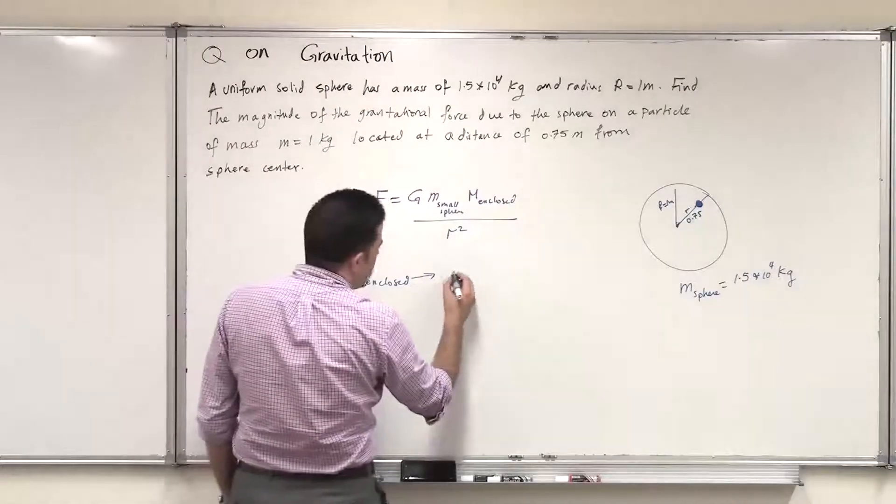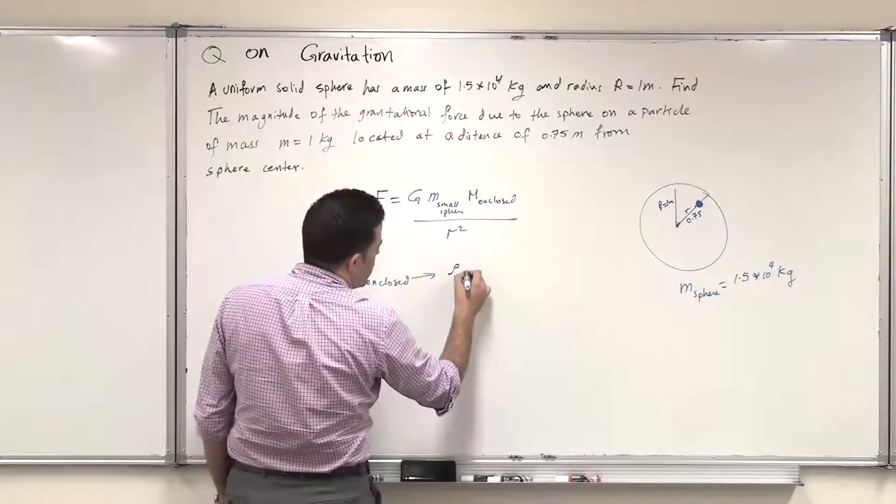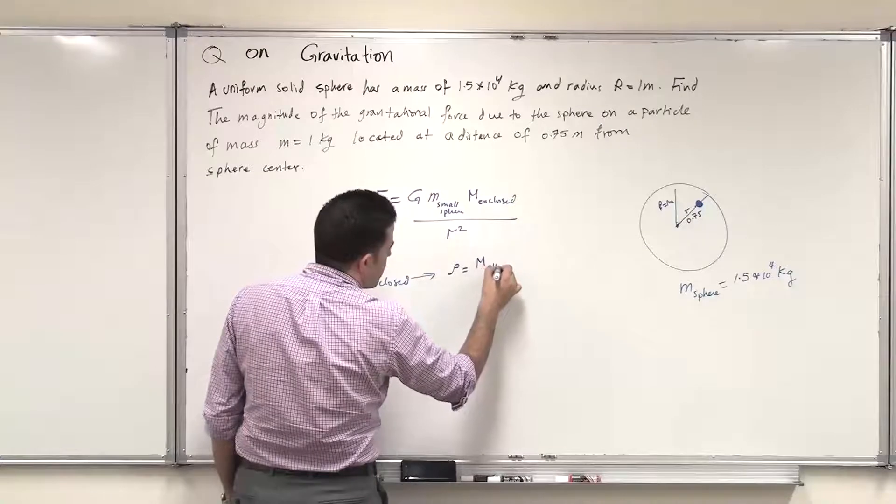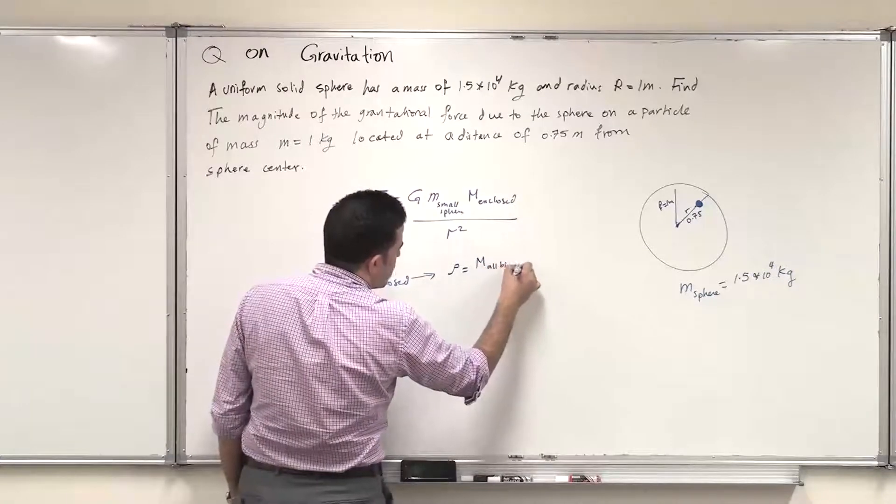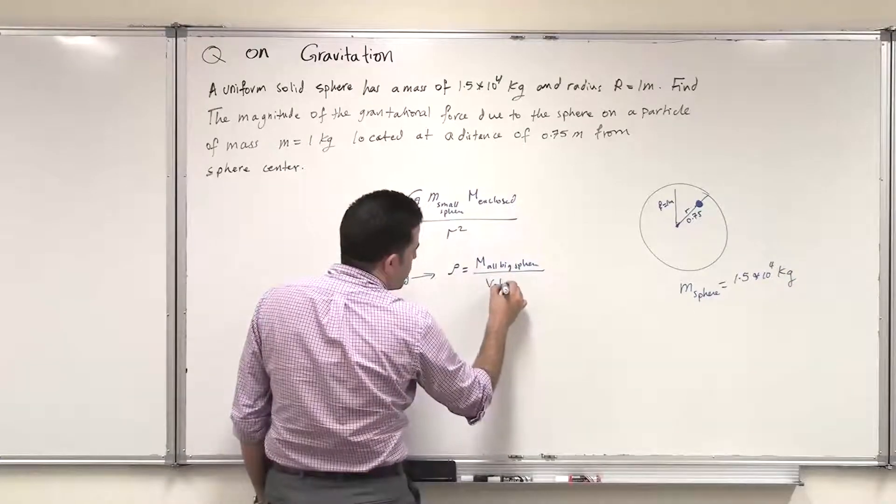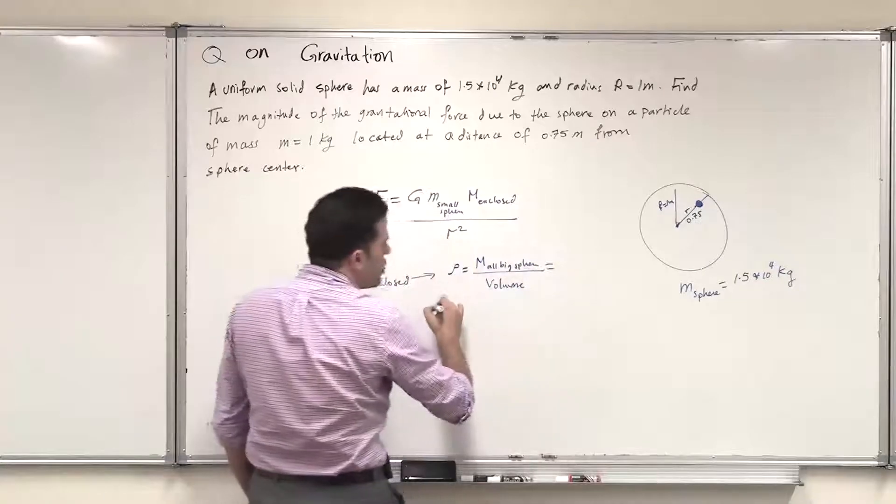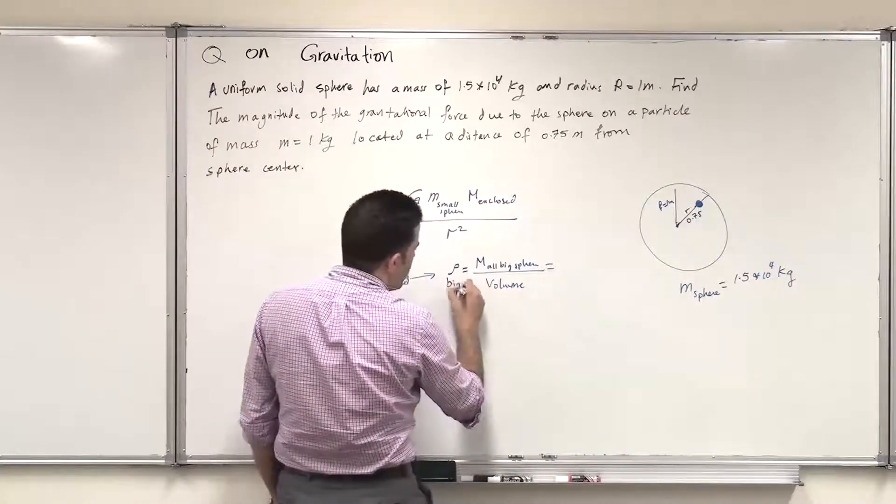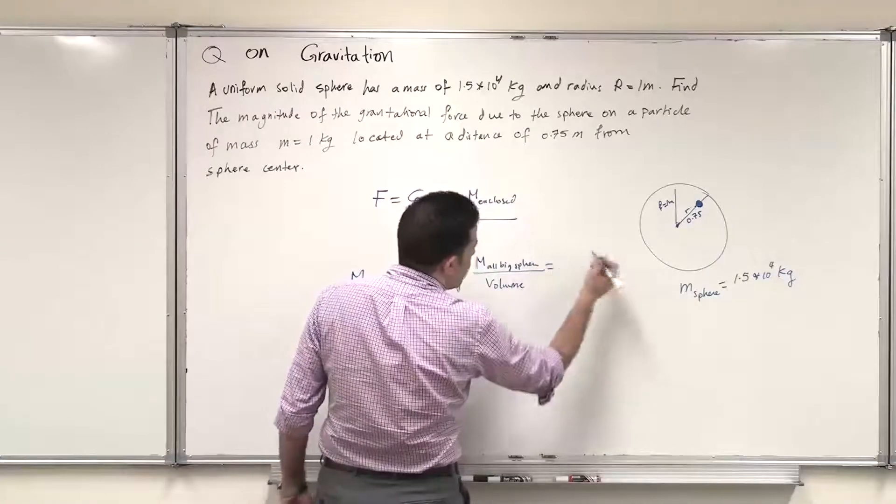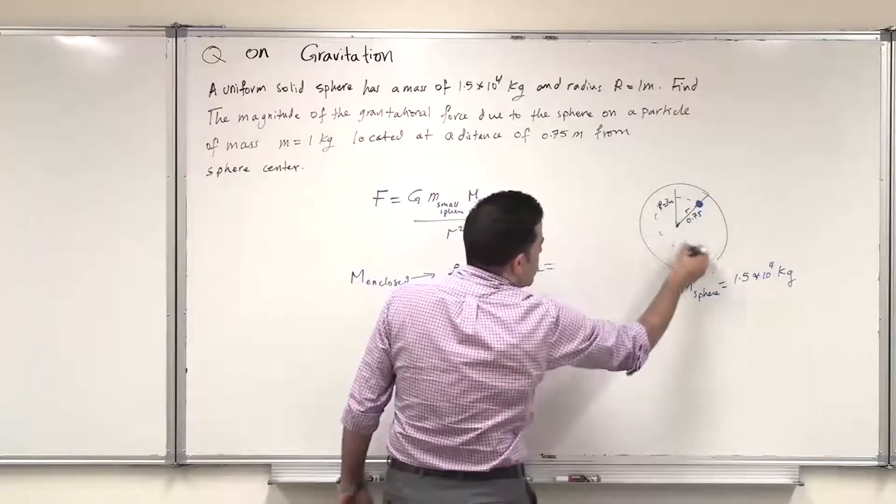So we can utilize the fact that the density is the same for a solid sphere, which means the mass of the big sphere divided by volume should equal the density. This is density of the big sphere because it's solid sphere, constant density, should equal the density of this enclosed mass.